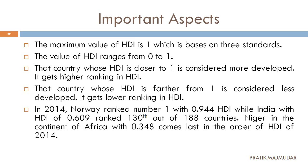If a country's HDI value is close to 0, their ranking will be lower. If a country scores nearby 1 — for example 0.95 or 0.94 — it is considered a good ranking. But if the score is near 0, the country is not considered to have a good HDI ranking.